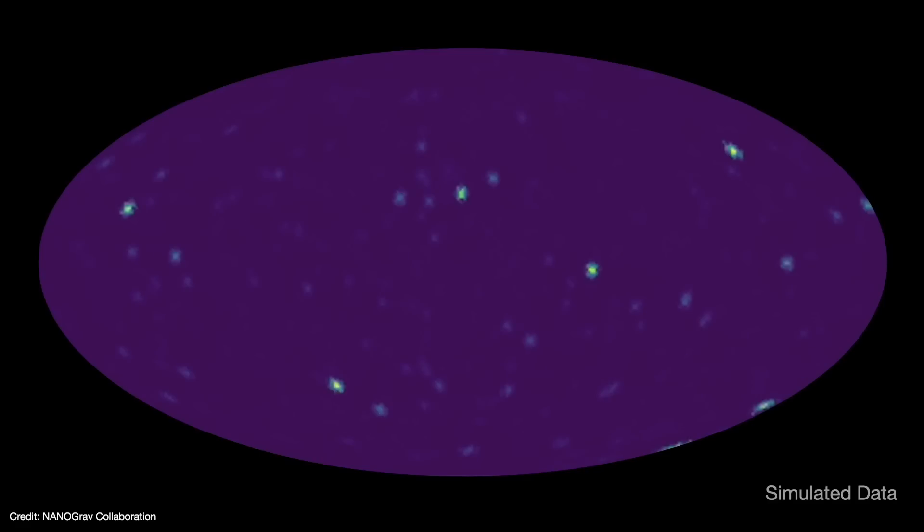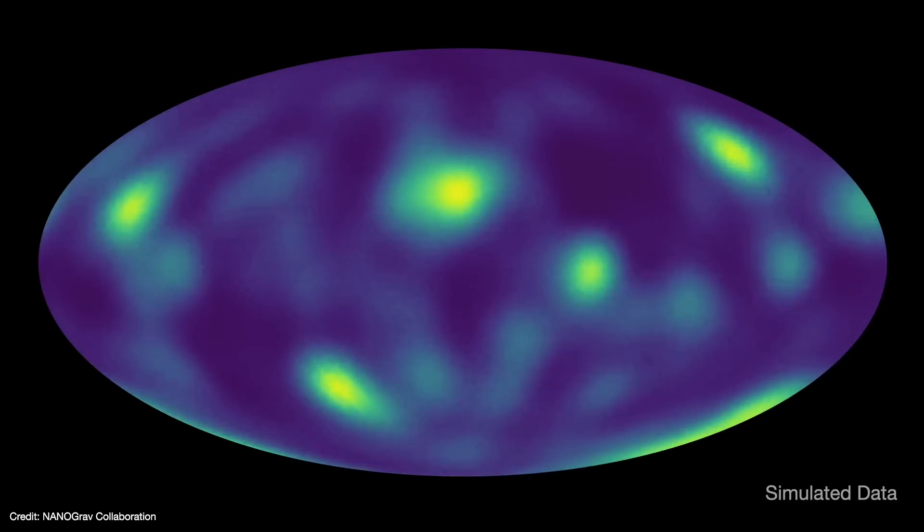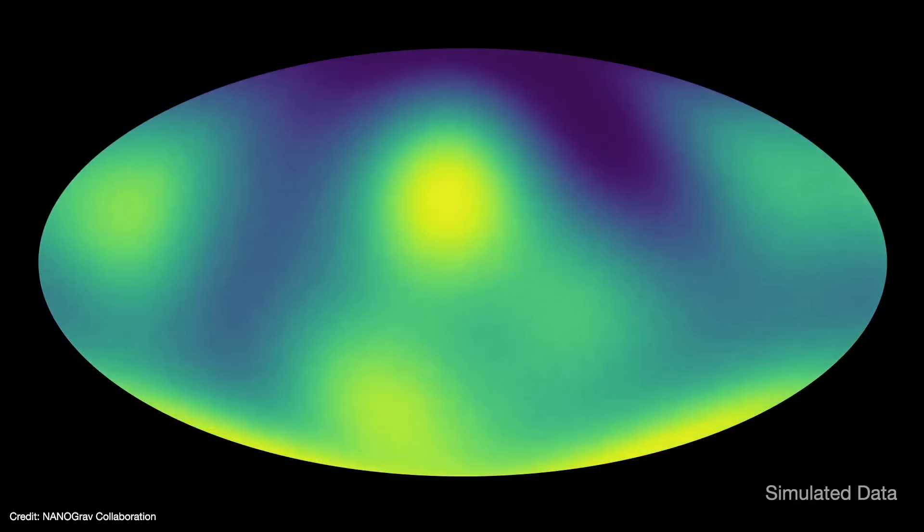To that end, the Nanograv team searched for signs of anisotropy in the data. But they didn't find it. Instead, the data seems to be an isotropic or uniform distribution around the sky.